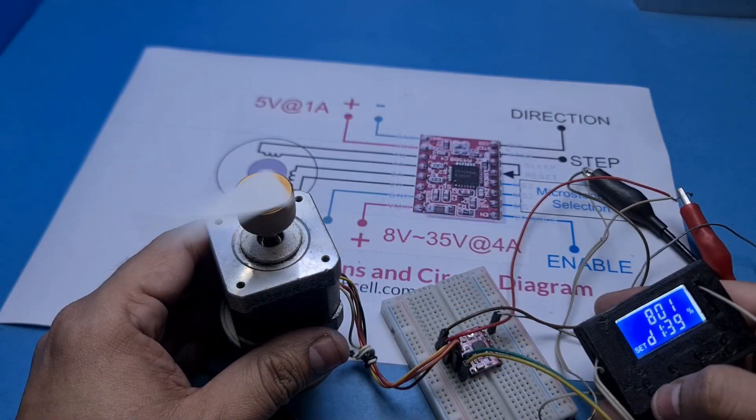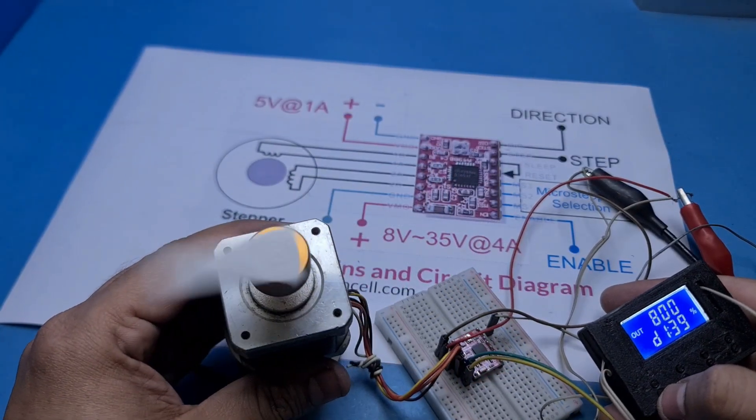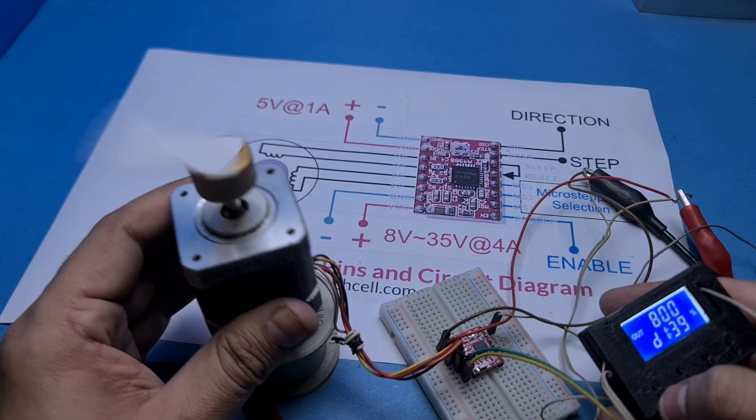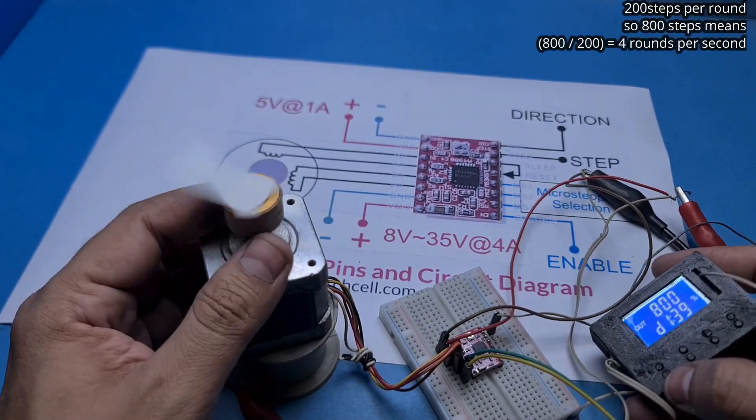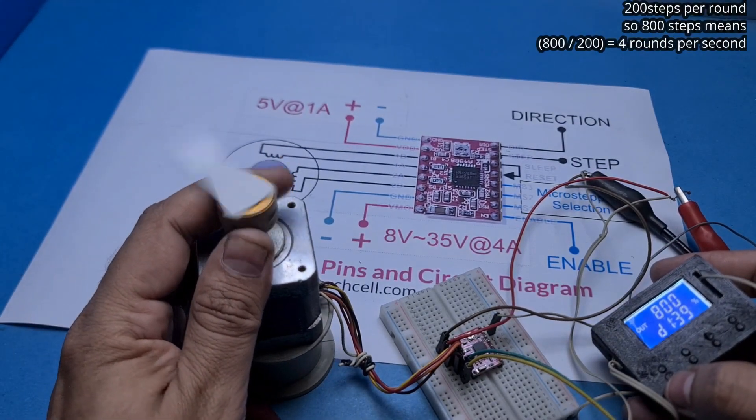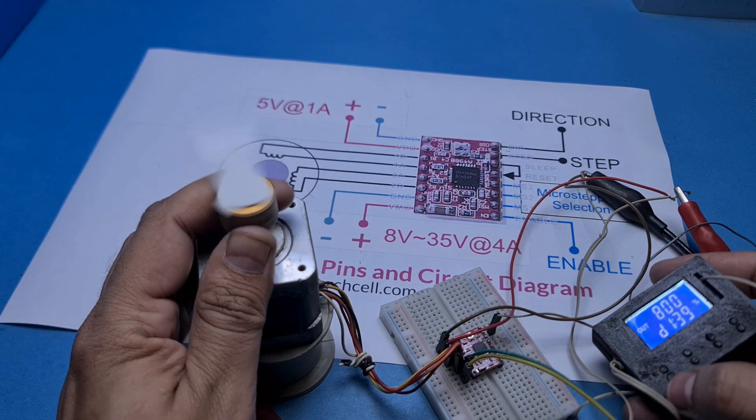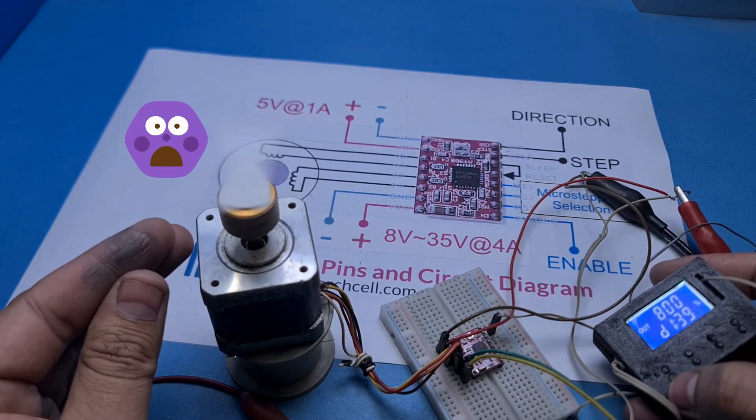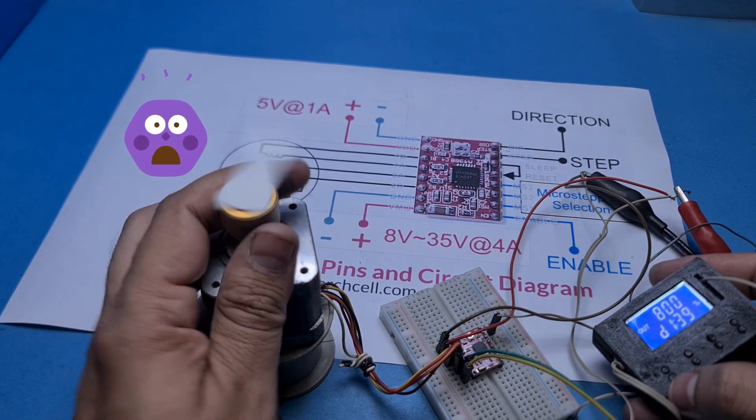Now I'm setting the frequency of my PWM unit to 800, which means the stepper motor is now rotating at four rounds per second. And you can see it is pretty powerful. I am unable to stop it using my fingers.